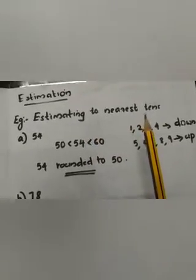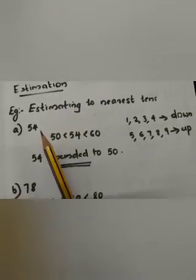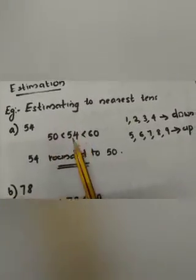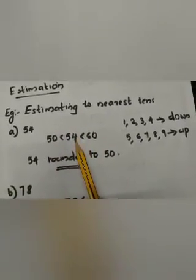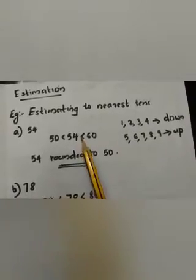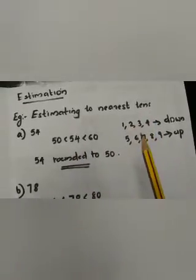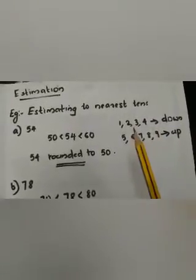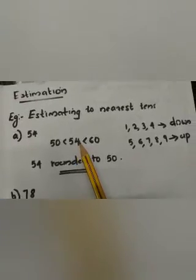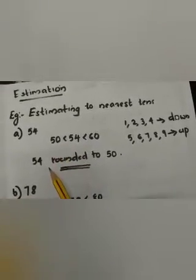We will look at how to estimate by rounding off. First, we can estimate to nearest tens. Here the number is 54. In order to round it to the nearest tens, we must first find out between which two tens 54 lies. You know that 54 lies between 50 and 60. The general rule is: if 1, 2, 3, or 4 comes as the last digit, we are rounding down; and if 5, 6, 7, 8, or 9 comes, we are rounding up. Here, in the ones place, it is 4, so we are rounding down. So 54 is rounded to 50.